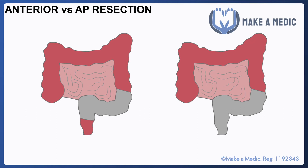Anterior resections and AP resections are two types of operation usually performed for rectal tumors in slightly different circumstances. An anterior resection involves removing the sigmoid colon and the top part of the rectum, and tends to be done for higher rectal tumors. An AP resection, or abdominoperineal resection, involves removing everything from the anus up to the top of the sigmoid colon, and tends to be done for lower-lying rectal tumors. The main distinction is that anterior resection is for higher rectal tumors and AP resection is for lower rectal tumors.